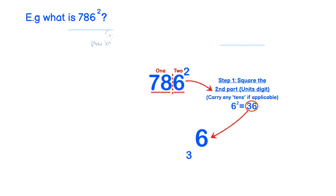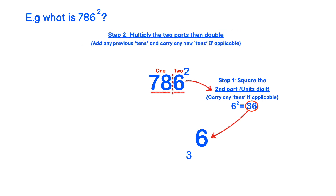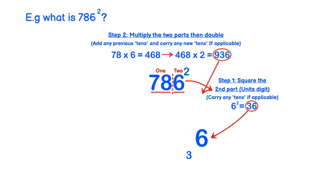Step 2: we multiply the 2 sections and then we double, add any previous tens and carry any new tens if applicable. So we do 78 times 6 which is 468. Doubling 468 gives us 936. Adding the 3 from before gives us 939. So we put 9 in the answer line and we carry the 93.